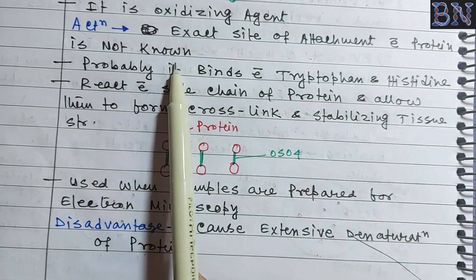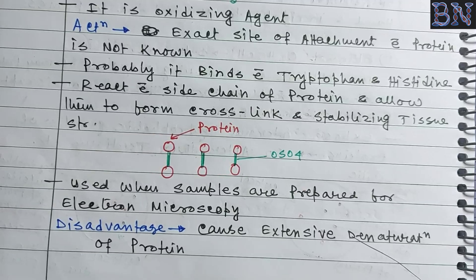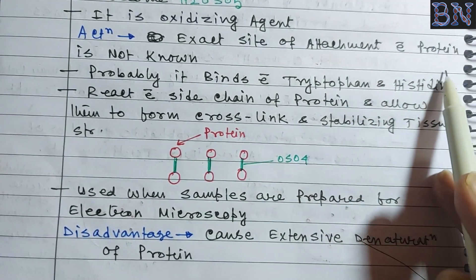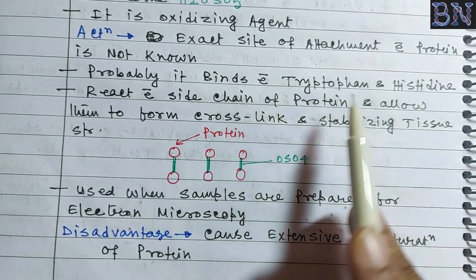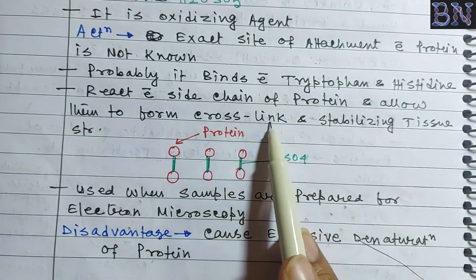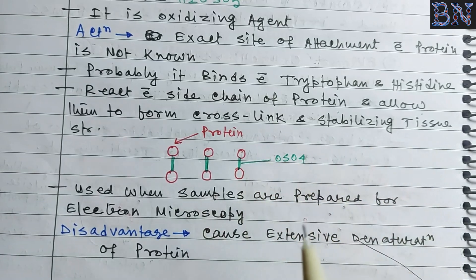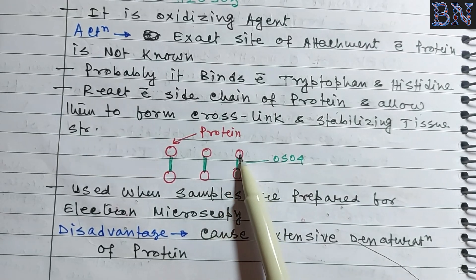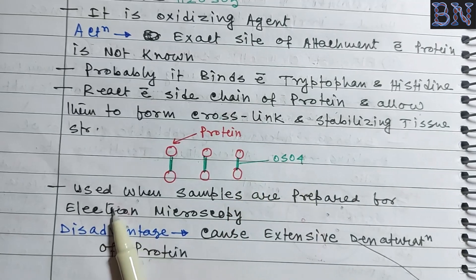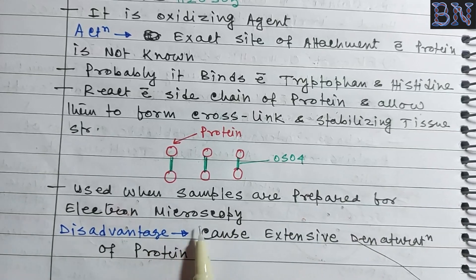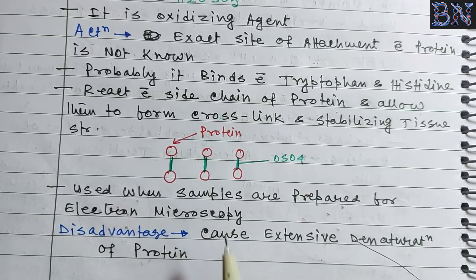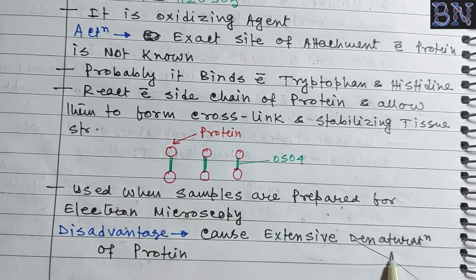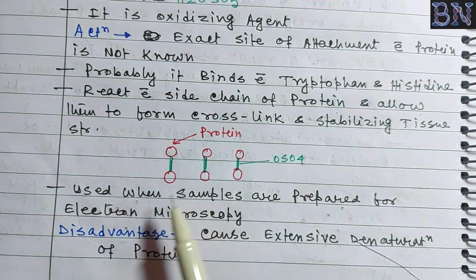Osmium tetroxide is an additive fixative. It probably binds with tryptophan and histidine amino acids. It reacts with side groups of the protein and allows them to form cross-links, stabilizing the tissue structure. Osmium tetroxide is especially used when samples are prepared for electron microscopy. A disadvantage is that it causes extensive denaturation of protein.